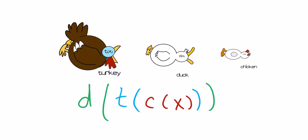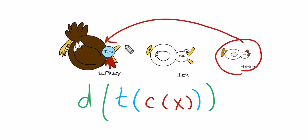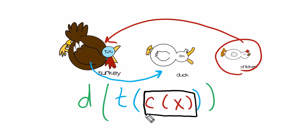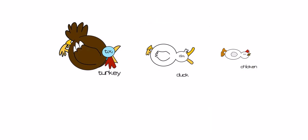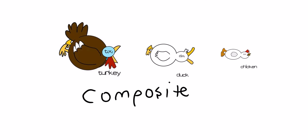This function is saying: take the chicken, put it inside of the turkey, then take the turkey and put it inside of the duck. The order of these functions matters. This is the most inner function, and it goes inside of this function. When that is done, you take the whole thing and put it into function D. This composition of functions is known as a composite of functions — we take functions and place them into each other.